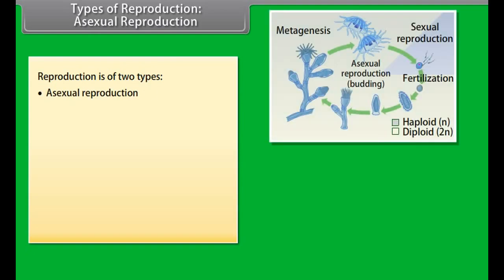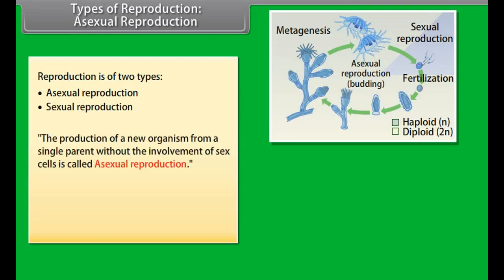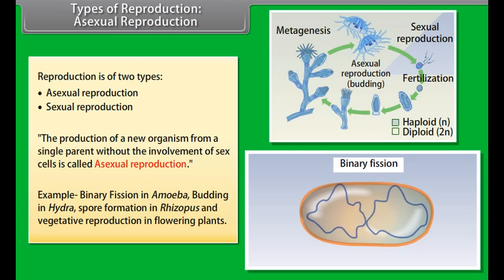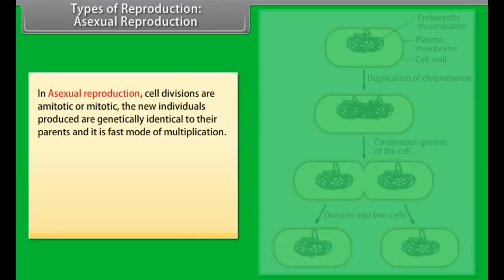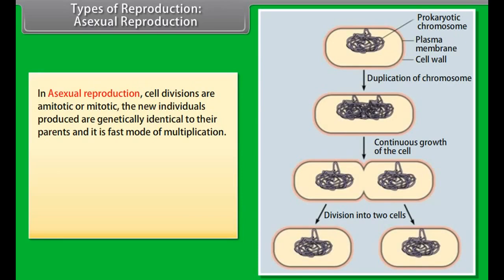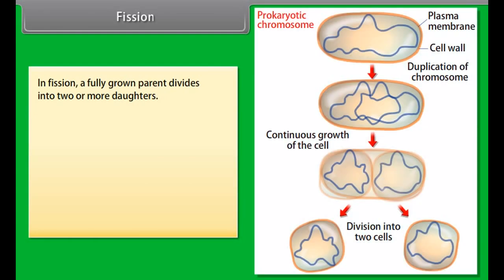So we can say that variation is important for the survival of species. Reproduction is of two types: asexual reproduction and sexual reproduction. The production of a new organism from a single parent without the involvement of sex cells is called asexual reproduction. In asexual reproduction, cell divisions are amitotic or mitotic. The new individuals produced are genetically identical to their parents and it is a fast mode of multiplication. The disadvantages are that identical organisms are produced generation after generation and evolutionary changes are not possible as variation does not occur.